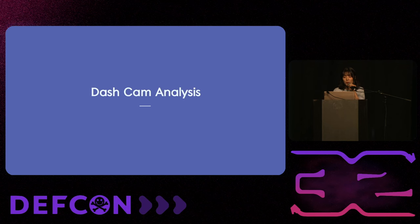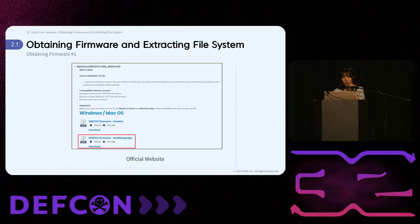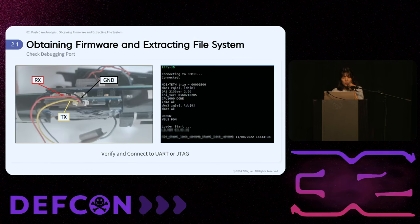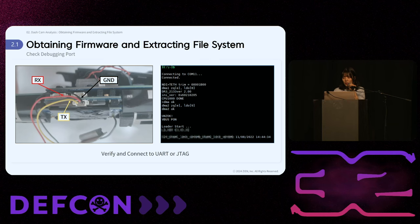Now let's review the method we employed to analyze the dashcams. Before beginning the analysis, it's essential to obtain the firmware. This is crucial for tasks such as decompiling code, analyzing the file system, and understanding the boot logic. There are four primary methods to obtain firmware. The first is to download it from the official website. The second method involves using debugging ports such as UART or JTAG. During our analysis, we found the UART port as illustrated in the picture, soldered connecting cables, and accessed the shell.